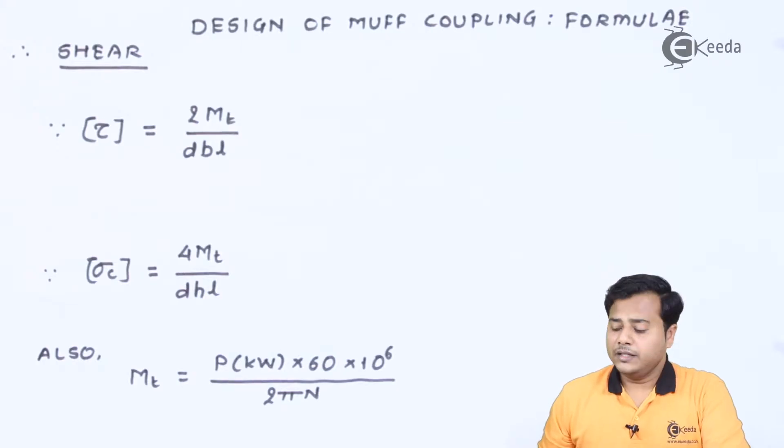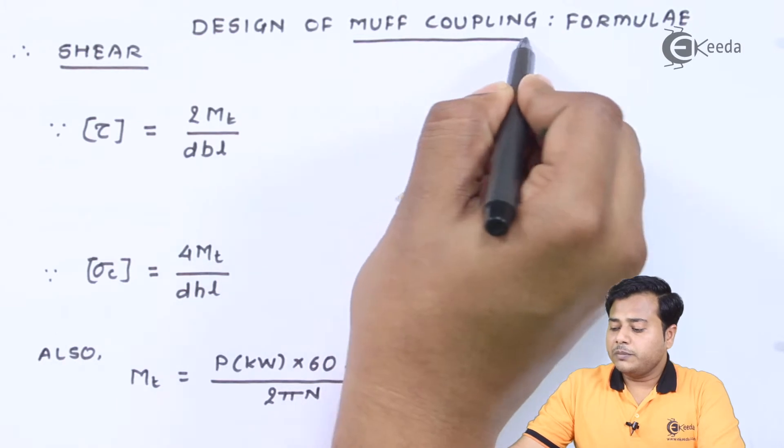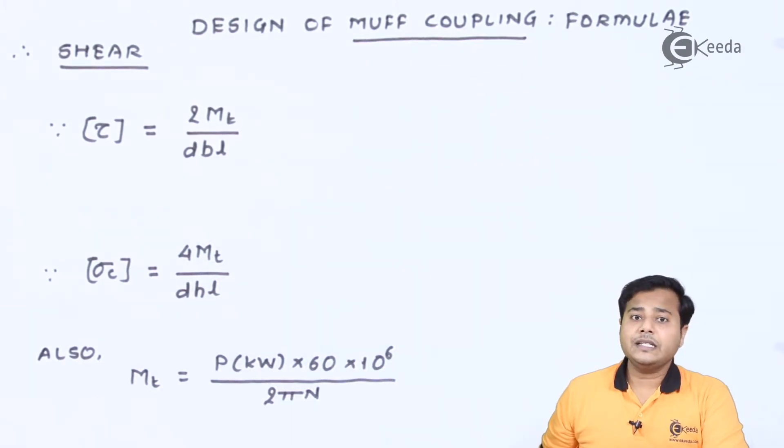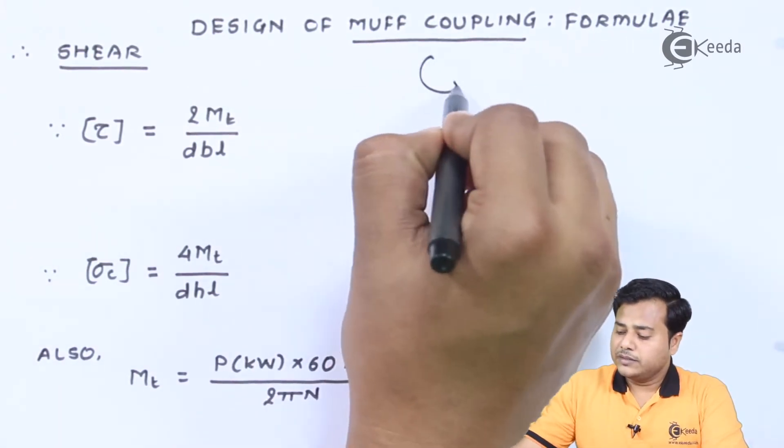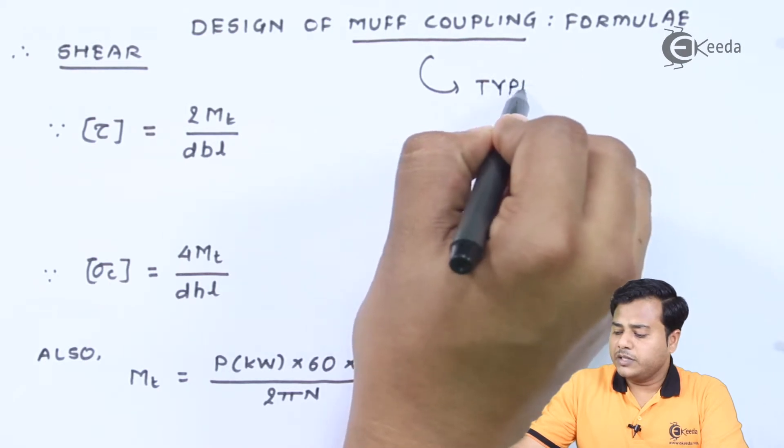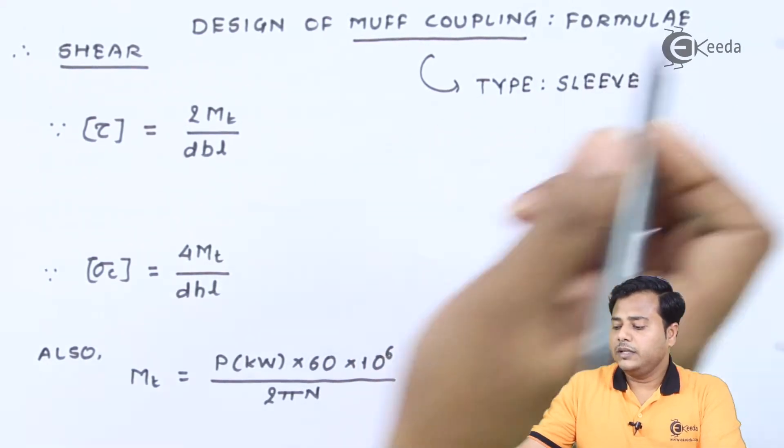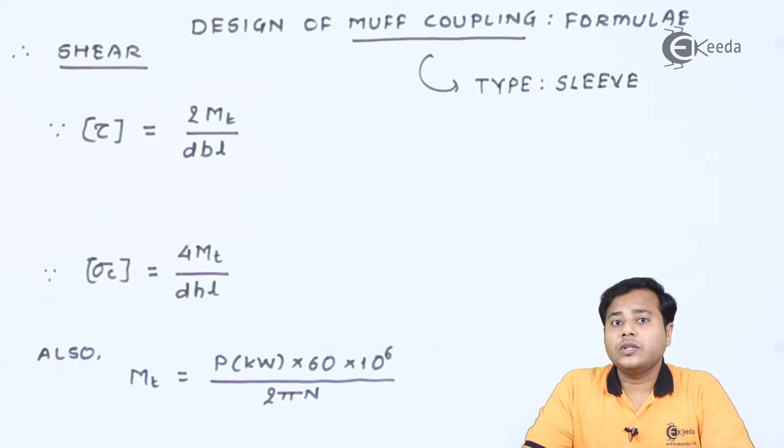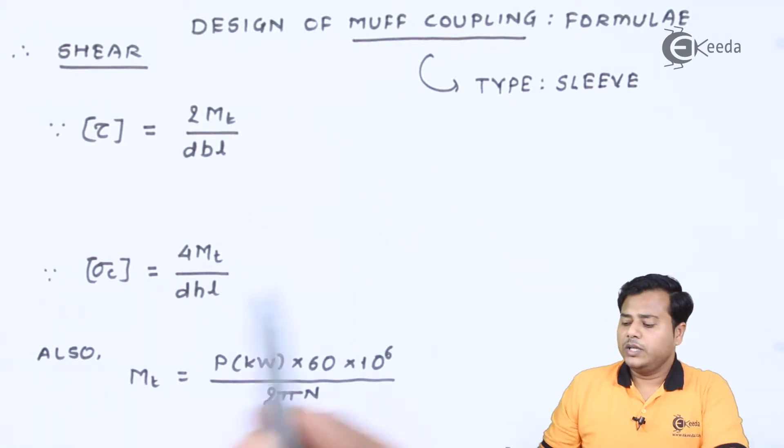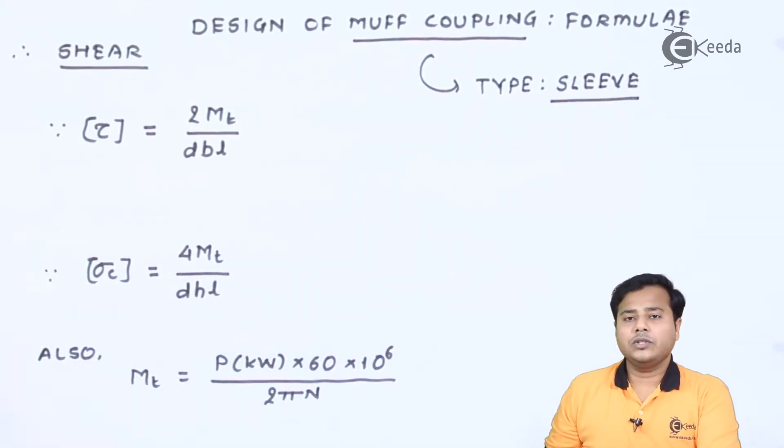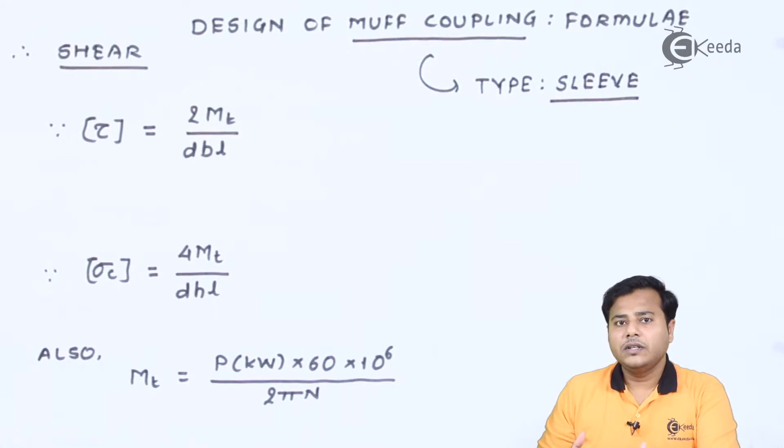So students, as we said, MUF coupling is the first coupling we are going to look at. It's a sleeve kind of coupling. So the type it comes under is sleeve. Friends, we know that sleeve is the outer cover under which we can insert two different materials. So the MUF coupling will be like a cover through which the shaft will be inserted.